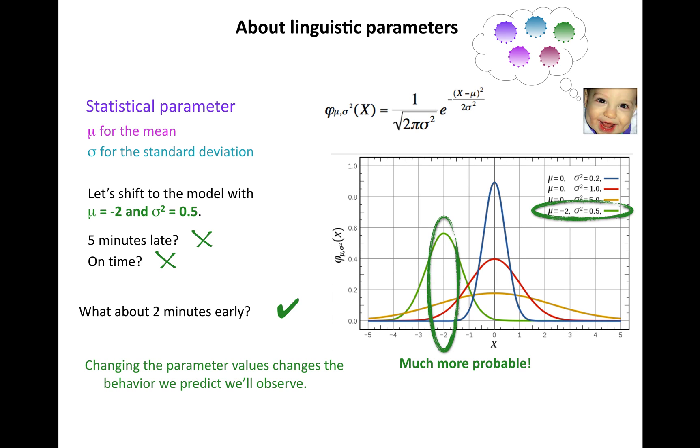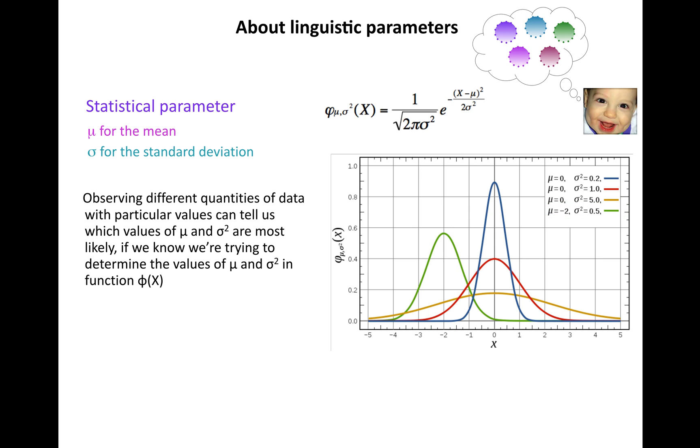Changing the parameter values clearly changes the behavior that we predict we'll observe. So how do we infer these parameter values?